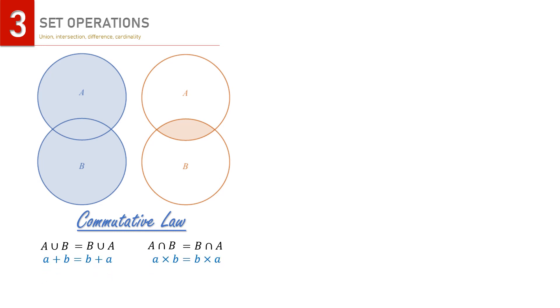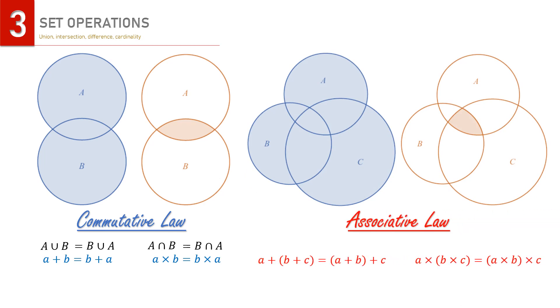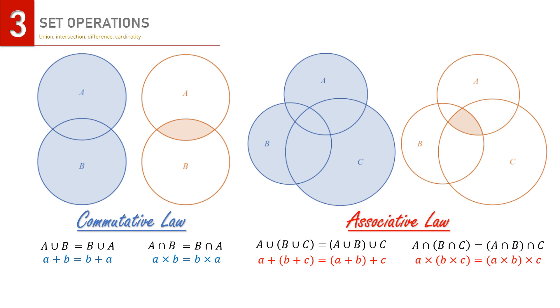This is similar to a+b = b+a and a×b = b×a. When dealing with three sets A, B, and C, as shown in these two Venn diagrams, the associative laws also apply. The first diagram shows one operation while the second diagram shows another.